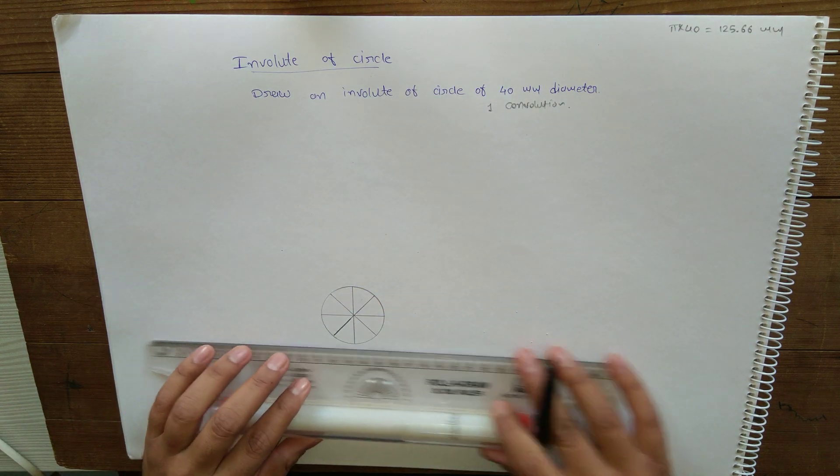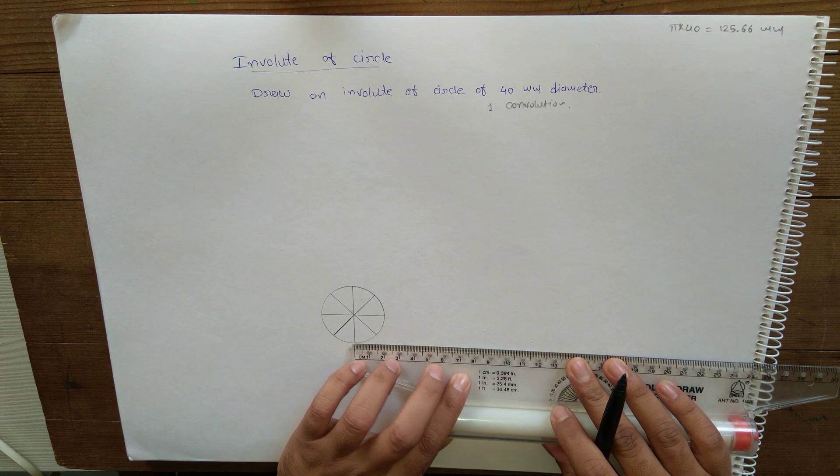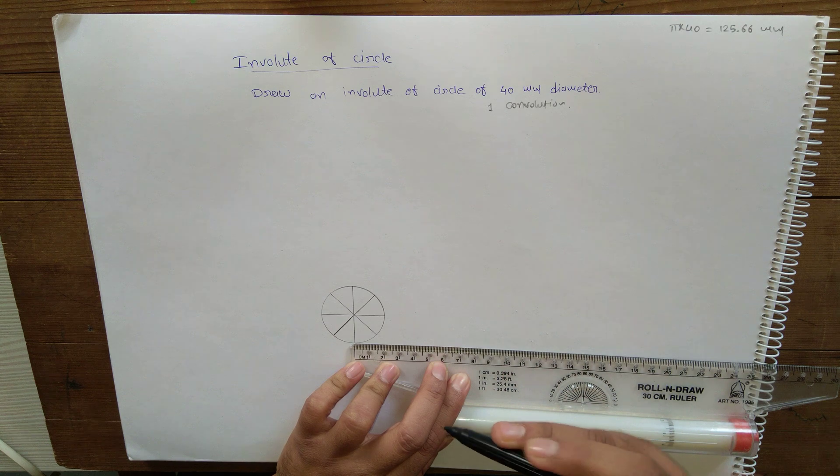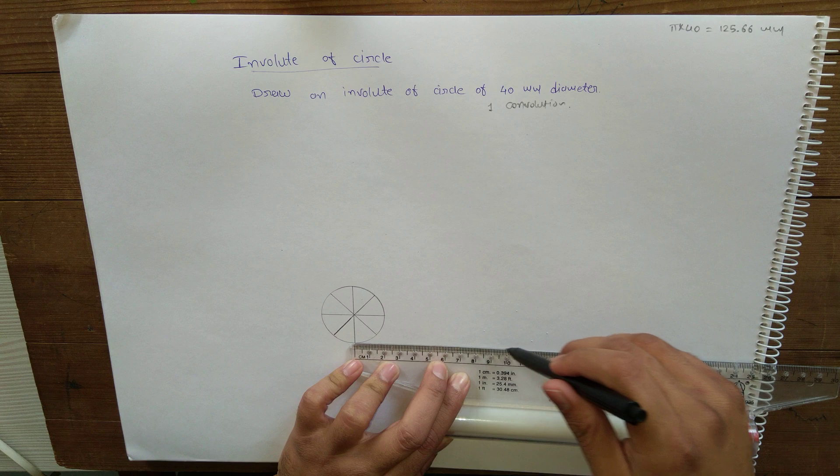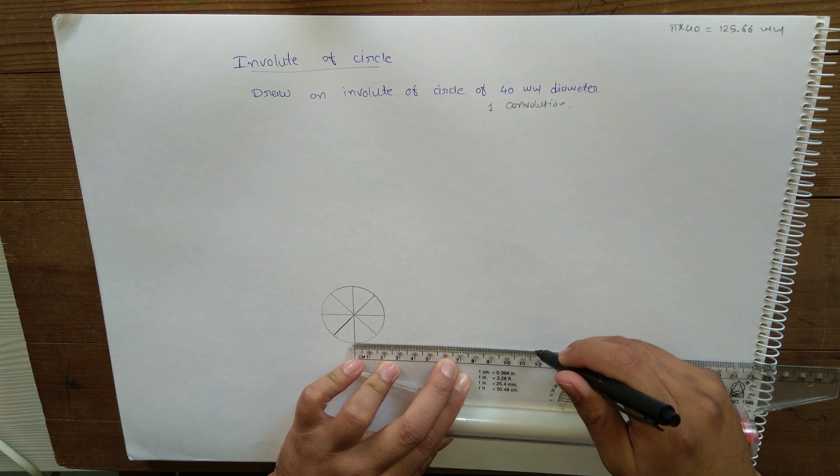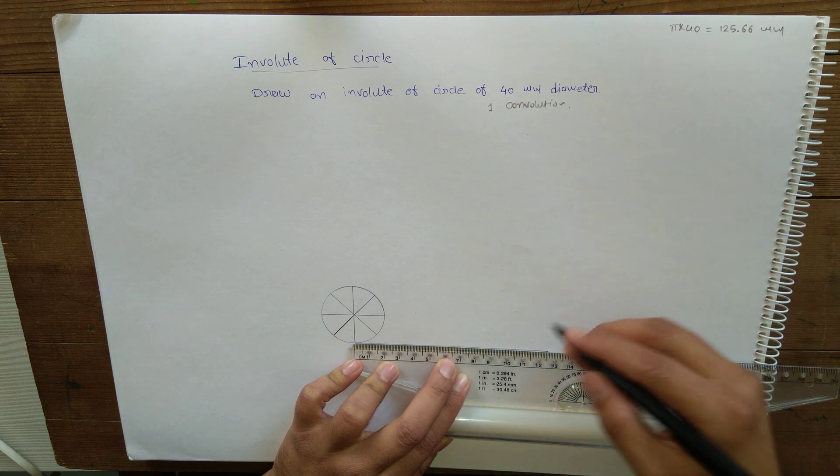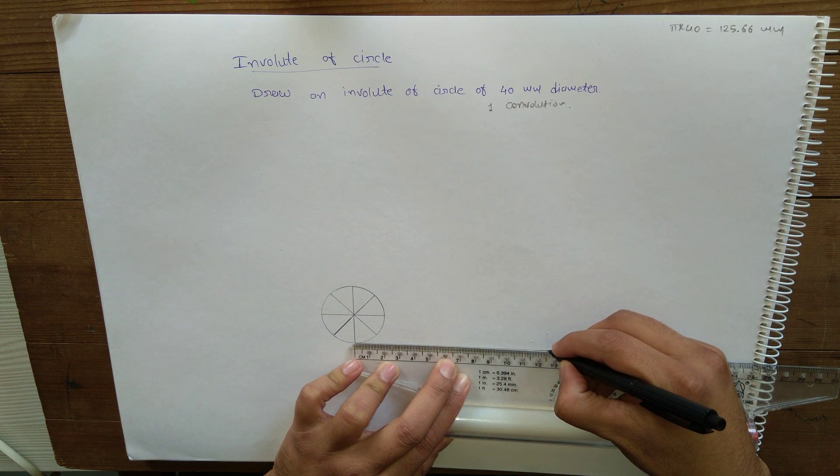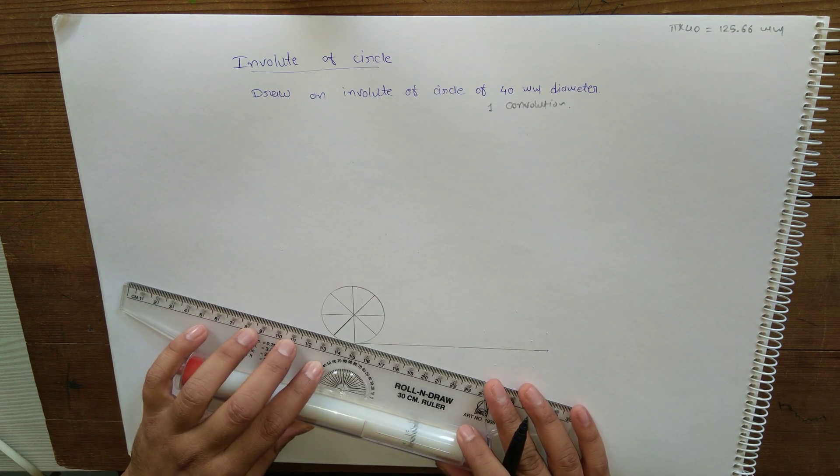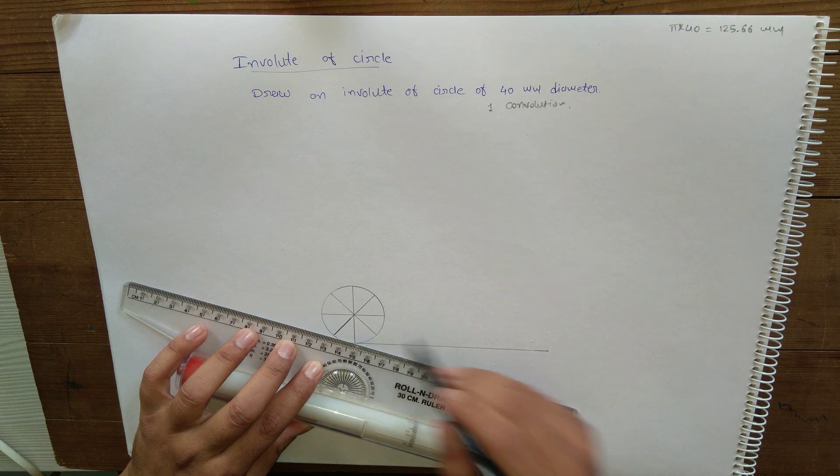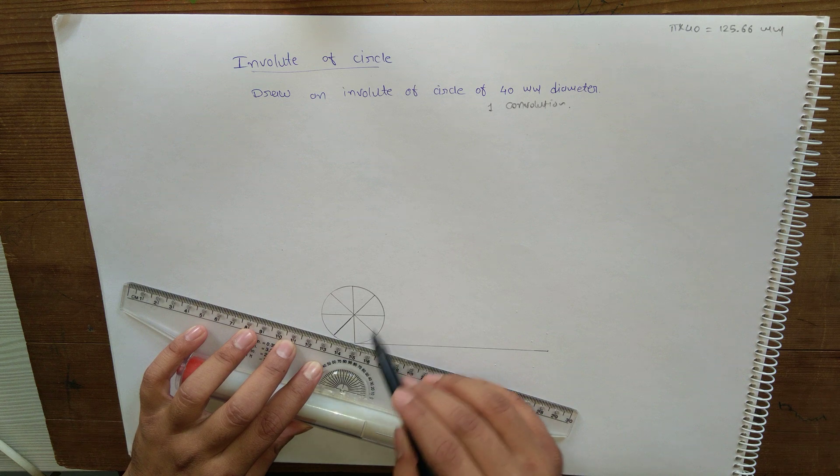Now for the length of the string which is 125.66mm, I will draw this as horizontal line from the bottom point of the circle, between 125 and 126, so approximately we can take this as 125.66. Also divide this line into same number of parts which we have done on the circle, so here also we need eight equal parts.